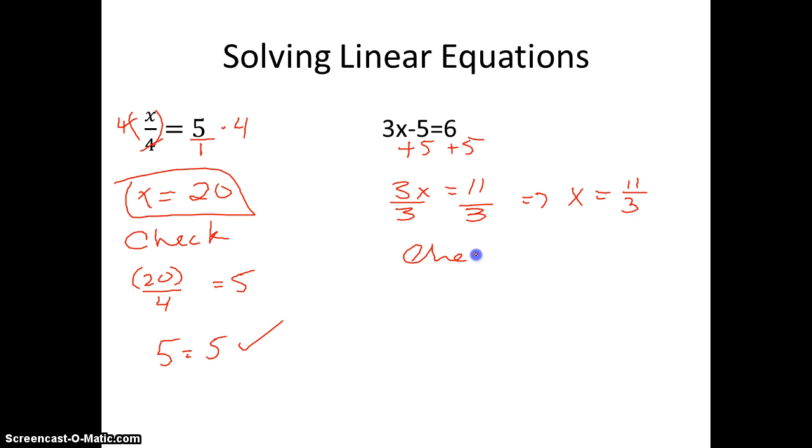So I get x equals 11 over 3. So now I got to check that. You got to check it every single time. 3 times 11 over 3 minus 5 equals 6. And we always plug it obviously back into our original equation. When I do 3 times 11 over 3 that will cancel. Give me 11 minus 5 is supposed to equal 6. 11 minus 5 is 6 which equals 6. Check. We know it works.